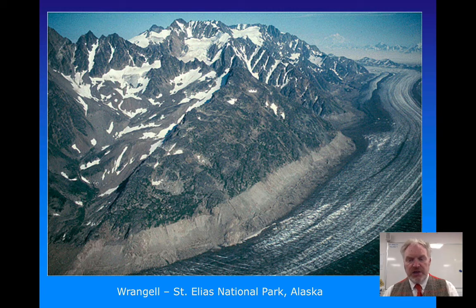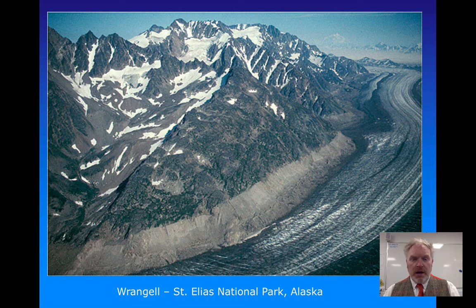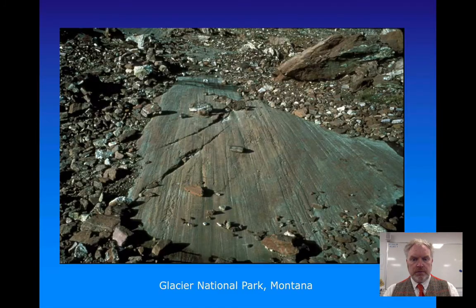Here we can see a glacial valley still with its glacier, although the glacier is clearly shrinking. If we look at the side of the valley, we can see almost like a tide mark on the rock — a place where the rock has been polished by the action of the glacier moving over it. We can use this boundary between polished, smooth glaciated rock and more angular unglaciated rock above to reconstruct the extent of ice sheets from the Quaternary.